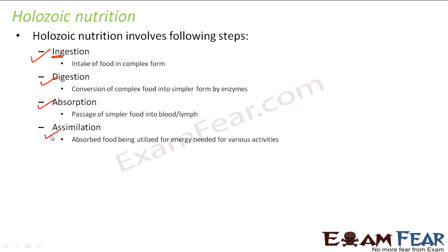From the next slide onwards we are going to talk about nutrition in different types of organisms. We will start with simpler organisms – unicellular organisms which have only one cell, where there is less complexity. We will begin our discussion with amoeba. But before that, let us look at the last step: ejection – the removal of undigested food.